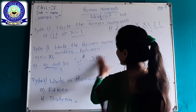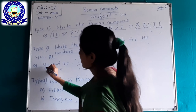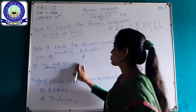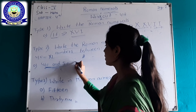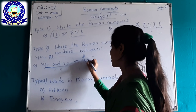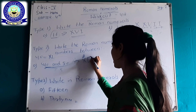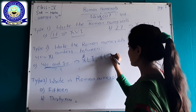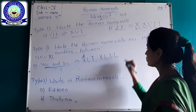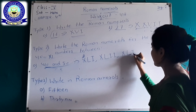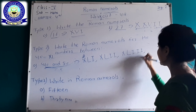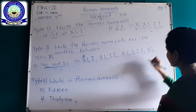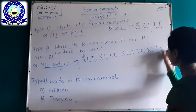You have to write the counting between 40 and 50 in Roman numerals: XLI for 41, XLII for 42, XLIII for 43, XLIV for 44.